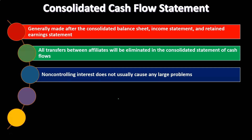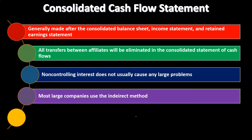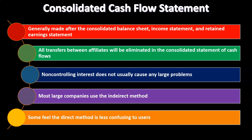Non-controlling interest does not usually cause any large problems here. Unlike the balance sheet and income statement where we have to really consider these items, it should be a more straightforward process in the Statement of Cash Flows. Most large companies use the indirect method. As with a single organization, we typically have the indirect method and the direct method, and many companies will use the indirect method.